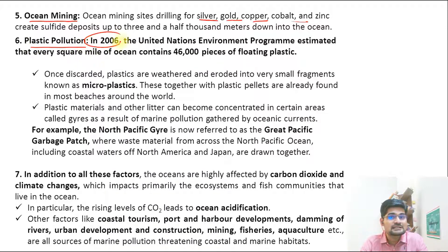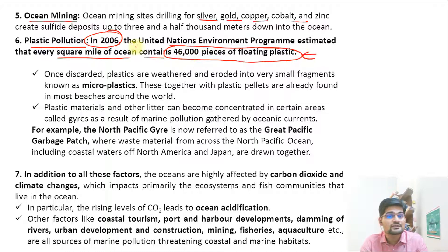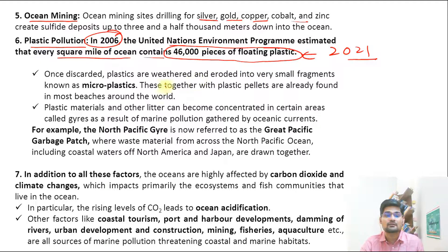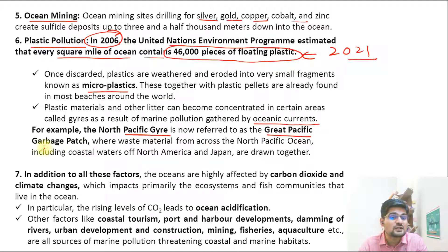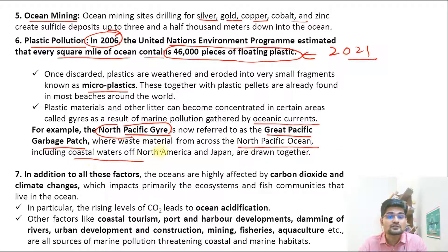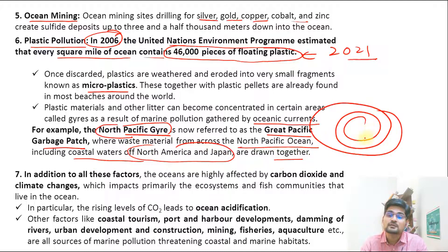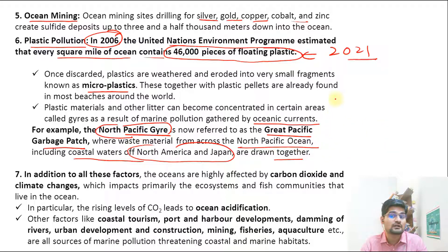Regarding plastic pollution, UNEP estimated in 2006 that every square mile of ocean contains 46,000 pieces of floating plastic — one can only imagine the scenario in 2021. Discarded plastics are weathered and eroded into very small fragments called microplastics, whose reach around the world increases significantly. One major example is the North Pacific Gyre, now referred to as the Great Pacific Garbage Patch, where waste from across the North Pacific Ocean — including coastal waters of North America and Japan — draws together into a vortex of waste.